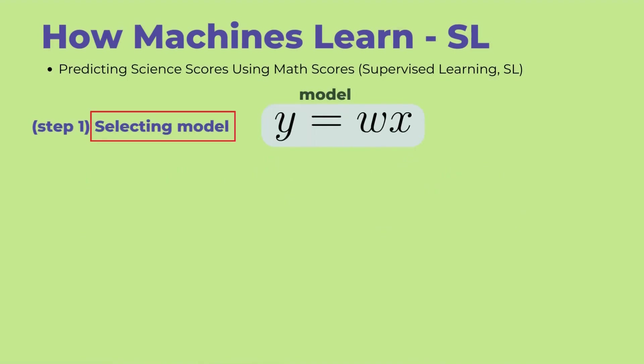First, in machine learning, the first task to be performed is selecting a model. A model is a function that outputs a value Y when given an input value X. There are various types of models used in AI. For this example, we will use a simple linear model Y equals WX.